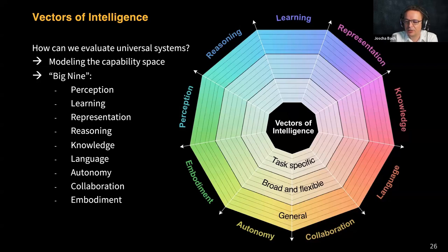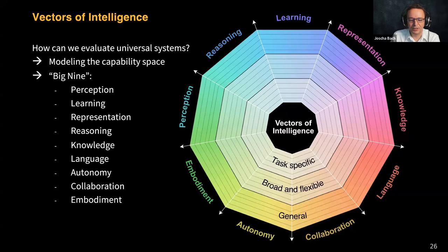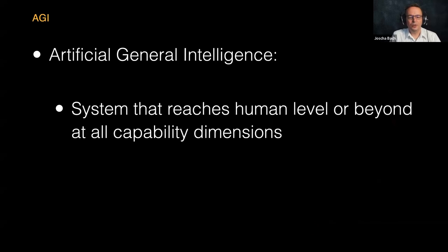These capability vectors define a space where the lower strata are extremely narrow and task-specific, while the highest stratum is truly intelligent. When we imagine this space as composed of regions, we can take any AI system — even the least capable chess programs — and locate them in the space. We find that a lot of that space is currently uncovered: systems don't seem to be autonomous, they're not coupled to an environment in real time, they have difficulty with real-time online learning, and so on. The question is: when do we reach a system that achieves human level or beyond in all capability dimensions?